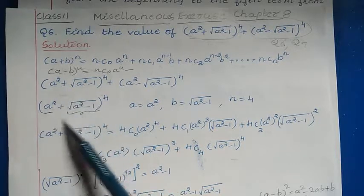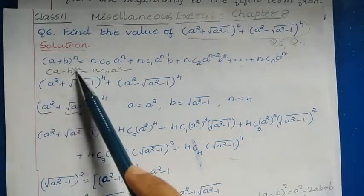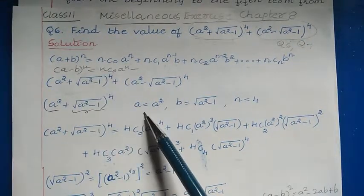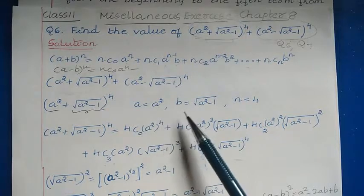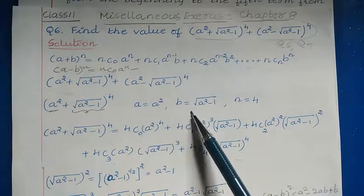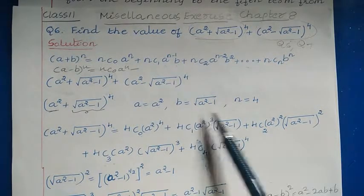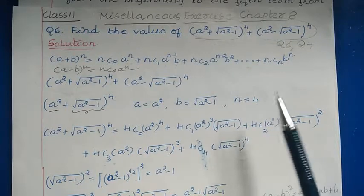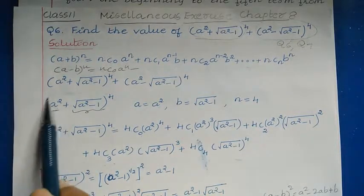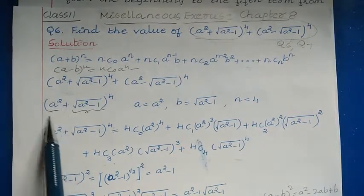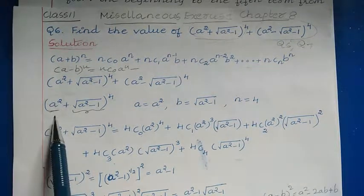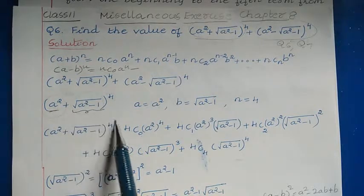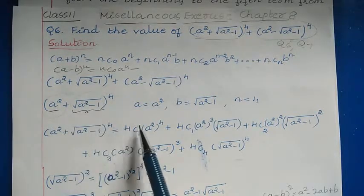Now compare this with the binomial theorem form (a + b)ⁿ. Here a is equal to a², b is equal to √(a²−1), and n is equal to 4. I am taking a² as the first term (the 'a' term) and √(a²−1) as the second term (the 'b' term). Now apply the binomial theorem.